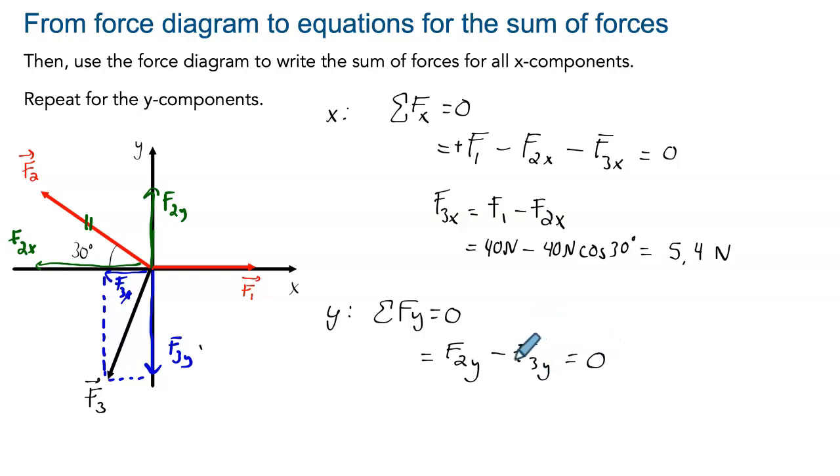And once again, we know that this is equal to zero, which means that F3y will just be equal to F2y, which was equal to 40 newtons times the sine of 30 degrees. So this will just be 20 newtons. And we have our components for both the x and the y-axis.